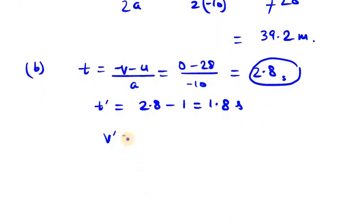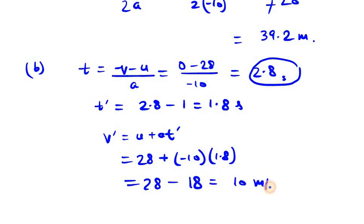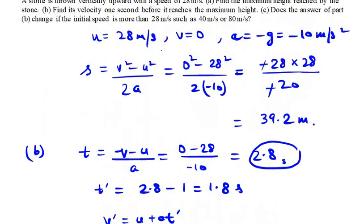Using V dash equals U plus A times T dash: U is 28, A is minus 10, and T dash is 1.8. So it will be 28 minus 18, which gives us 10 meters per second. The velocity is 10 meters per second.